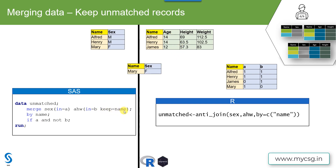Even if we do not use keep = name, we will still get all variable names from the second dataset — age, height, and weight — in the output, but all of them will have null values because we are exclusively filtering names present only in the first dataset with no match in the second. Whenever there is no match in the second dataset, all variables from it will have missing values, which adds no value. Anti_join handles this by default: it does not bring any variables exclusive to the second dataset into the output. It only checks whether a name value is present in the second dataset; if it is, it drops that record from the output.